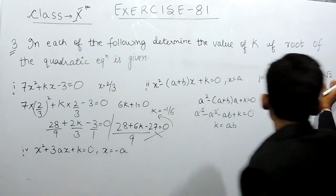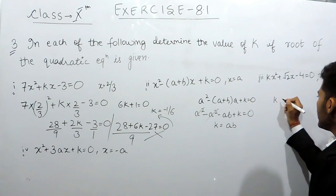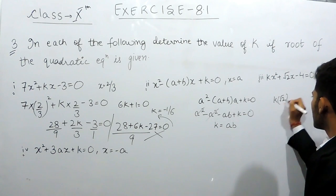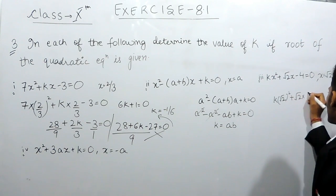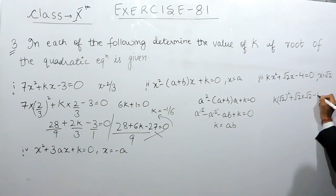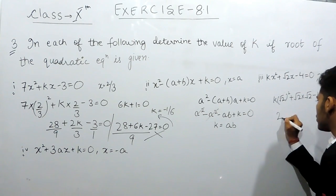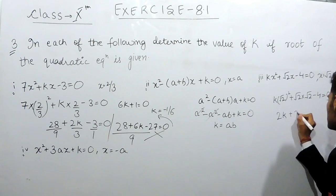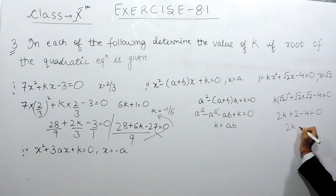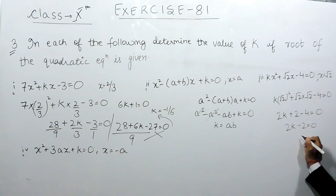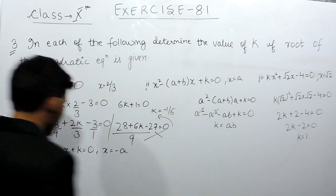Now in this one, we will keep x equals to root 2 in this. So k multiplied by root 2 whole square, plus root 2 multiplied by root 2 minus 4, will be equals to 0. That gives 2k plus 2 minus 4 equals to 0, so 2k minus 2 equals to 0, and k will be equals to 1.